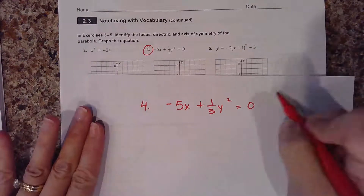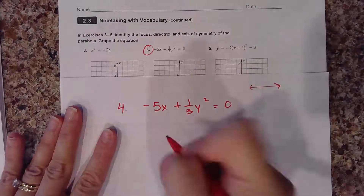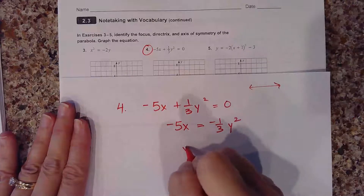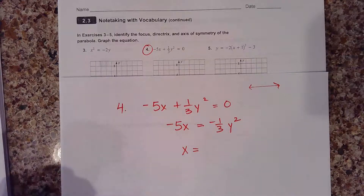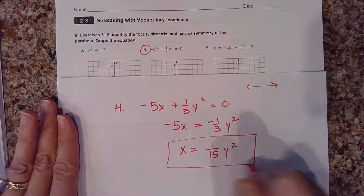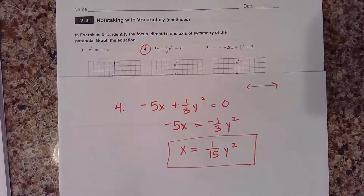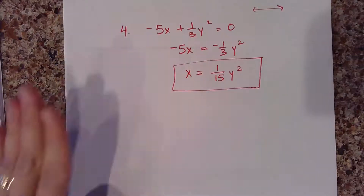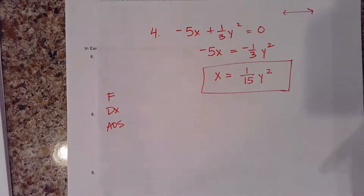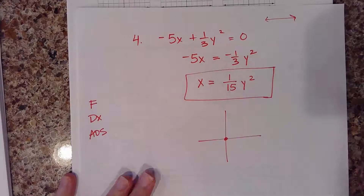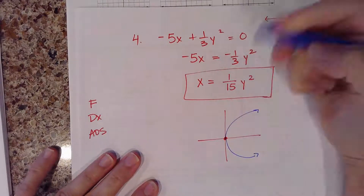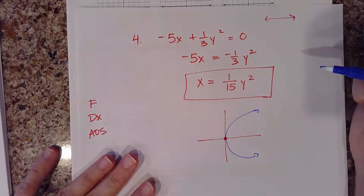I'm going to subtract 1/3 y squared from both sides, then divide both sides by negative 5 — or multiply by negative one fifth. When I do that, I get x equals 1/15 y squared. This is my equation to graph. This is why I said this is a little weird because there are a lot of fractions. Since the value out front is positive, the parabola is facing to the right. If it's negative, it faces to the left.